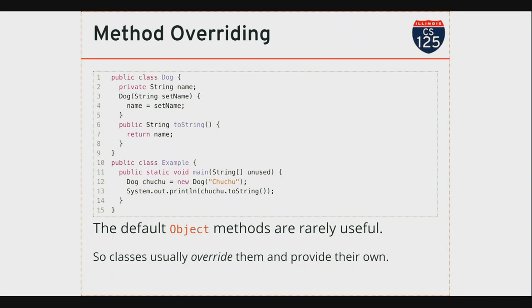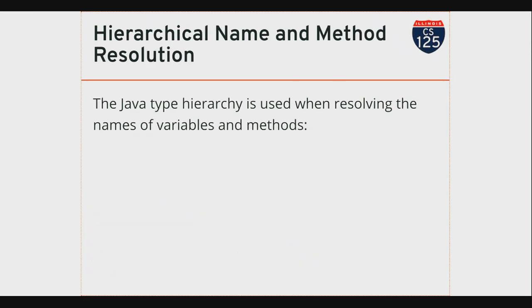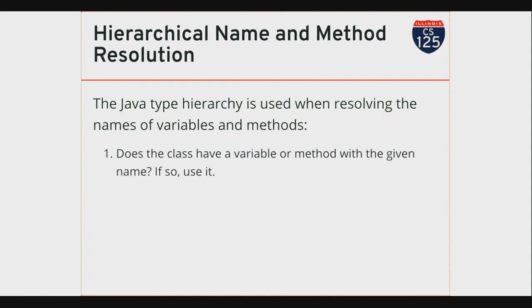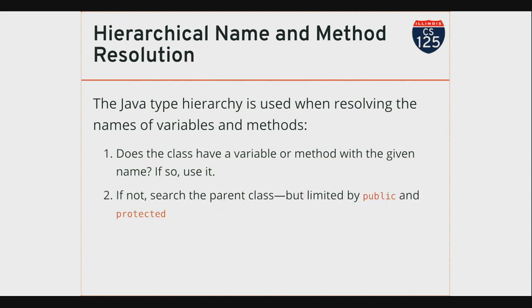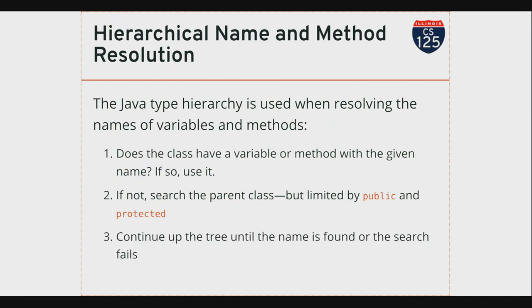Whenever Java is looking for a variable or method to call, it starts in the class you're working with and asks: does it have a method with the right signature — the name and the arguments? If so, it uses that. If not, it looks in the parent class. The parent class might define its own private methods, so I can only inherit public and protected methods. This process continues until either I find the thing I'm looking for or I get to Object. If Object has it, I'm good; if not, the compiler fails and gives an error message.